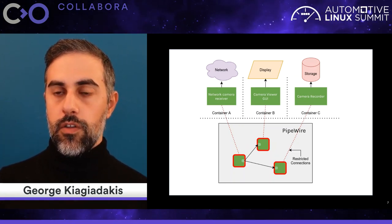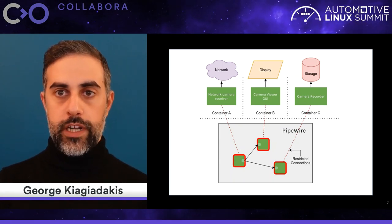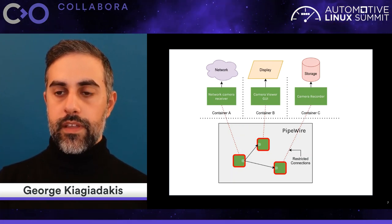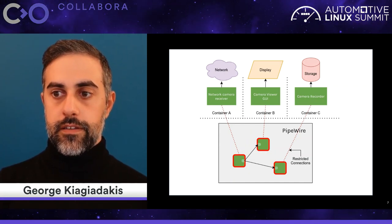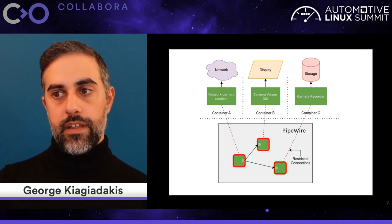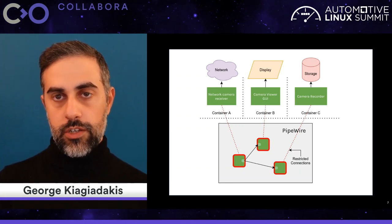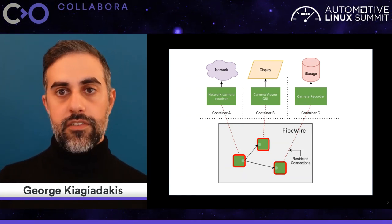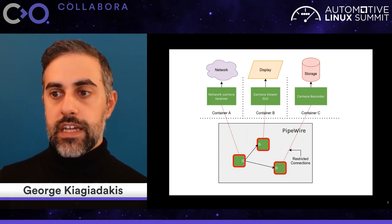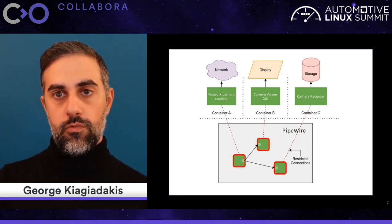All three containers connect to PipeWire by opening its socket. These connections are restrictive — because the applications come from different containers, they do get access to PipeWire but cannot do much with that connection. They cannot see other clients connected to PipeWire, cannot change settings or manipulate devices. They can only do what they are intended to do and what we allow them to do.